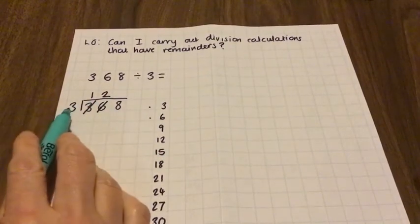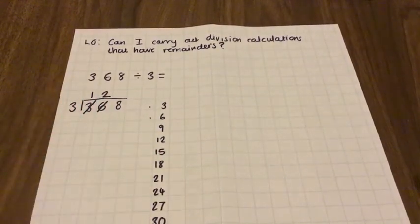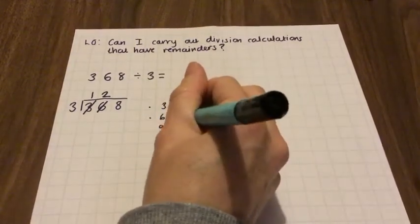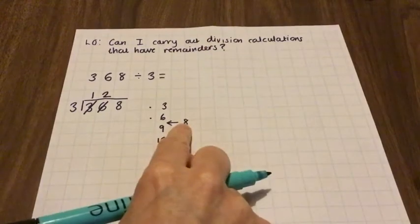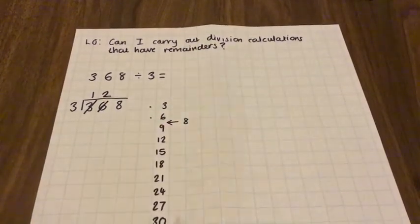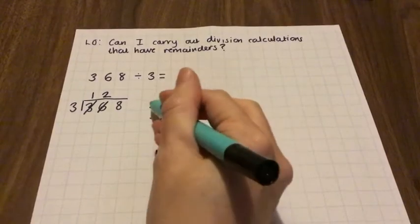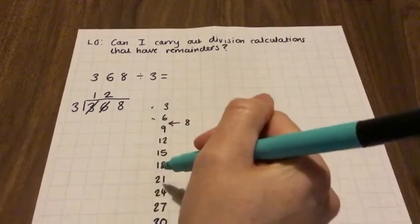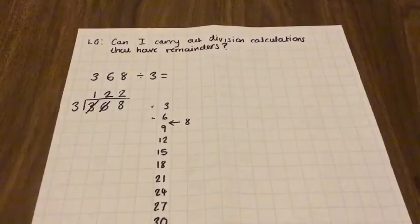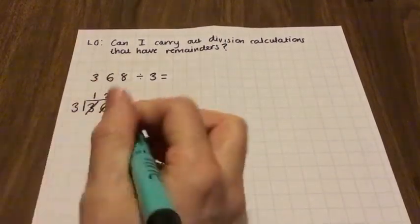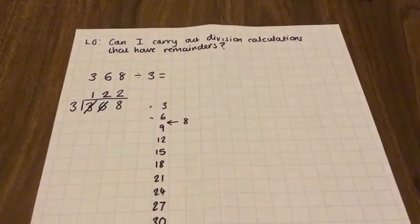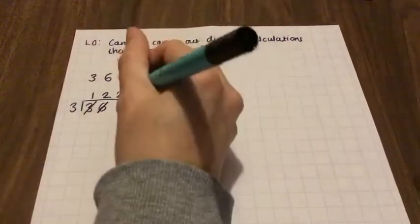Final number. How many 3's fit into 8? Now, 3's don't fit into 8 exactly, but 8 lies here in our 3 times table between 6 and 9. So we can see that 1, 2 threes fit into 8, but we haven't used all of 8 up. And we've got no more numbers here to carry the number over. That means that we've got a remainder.